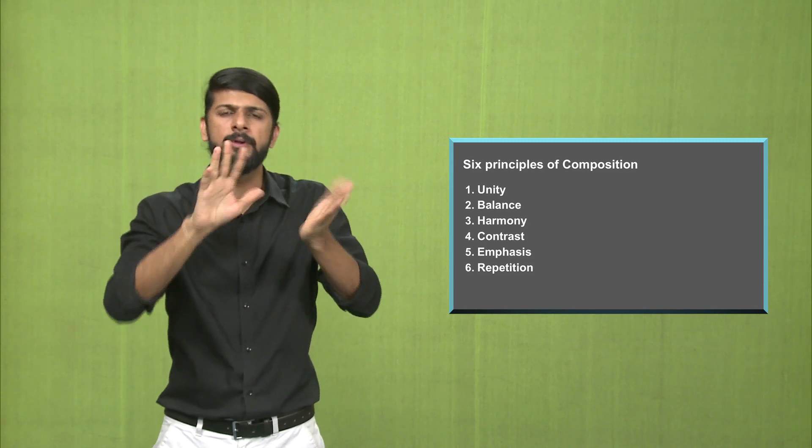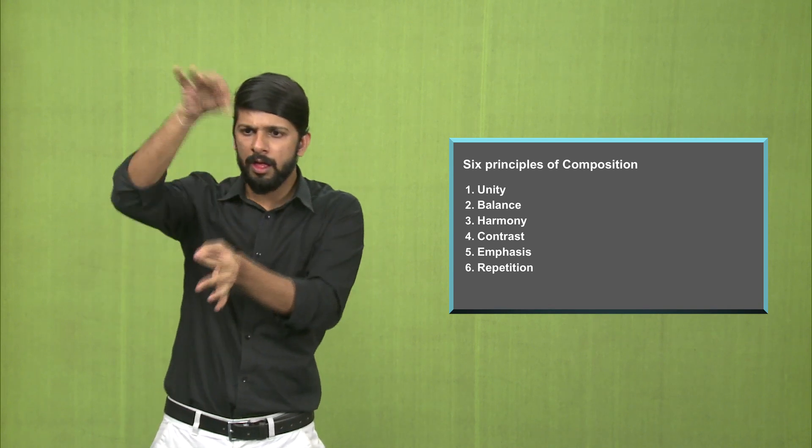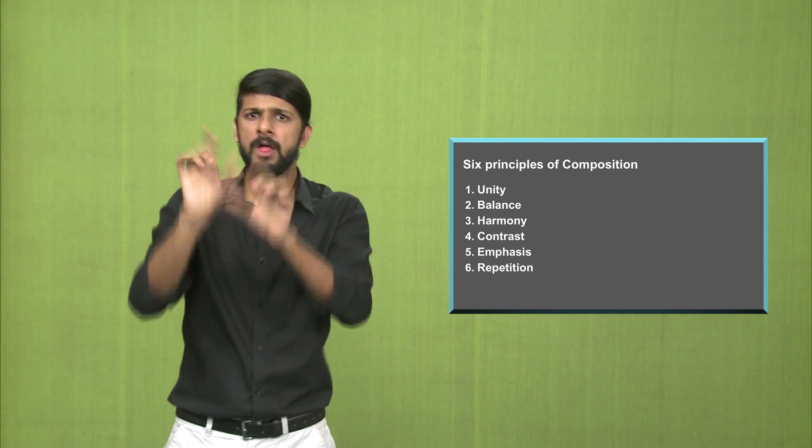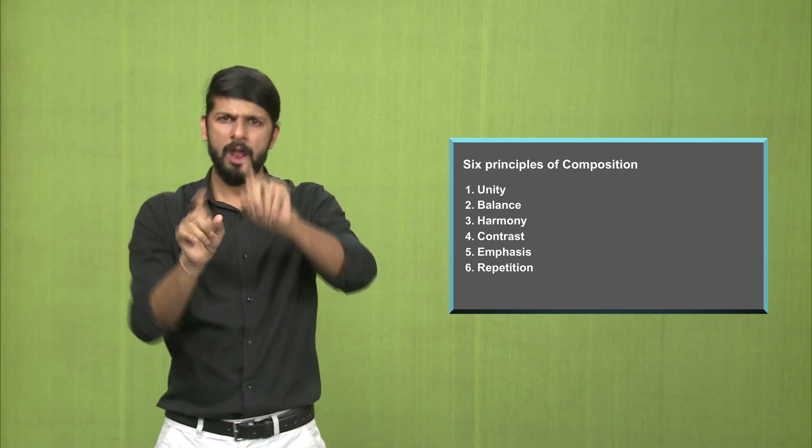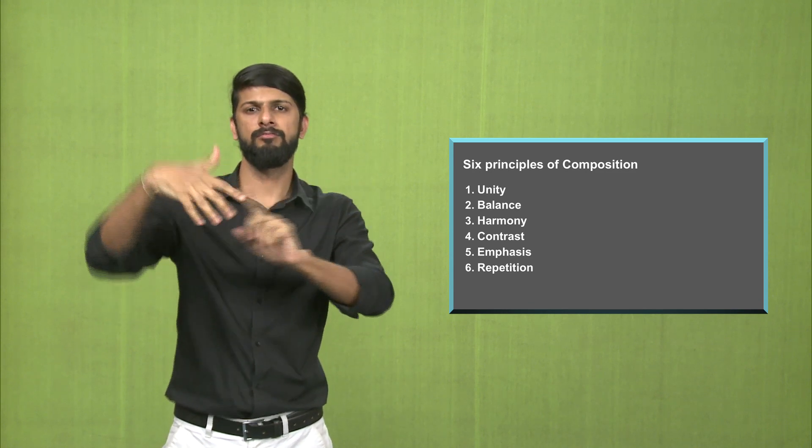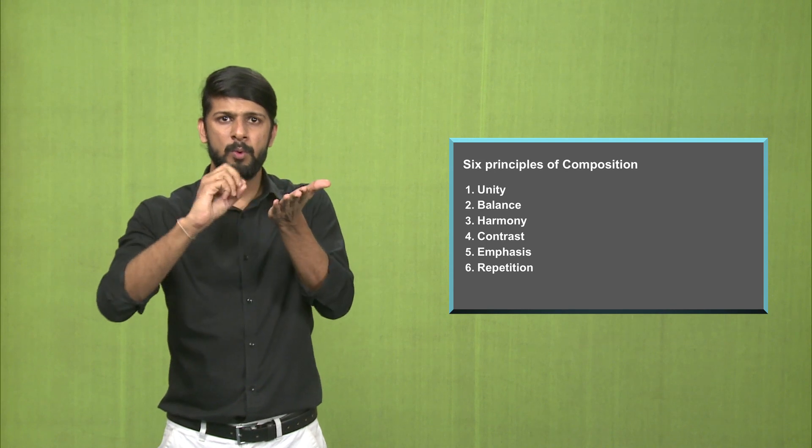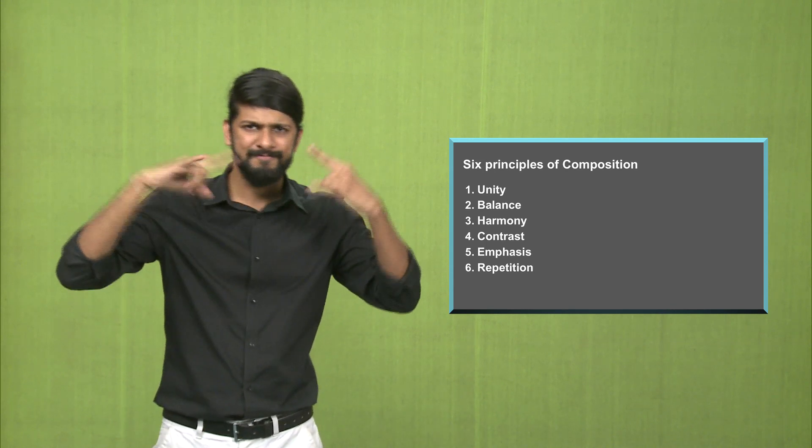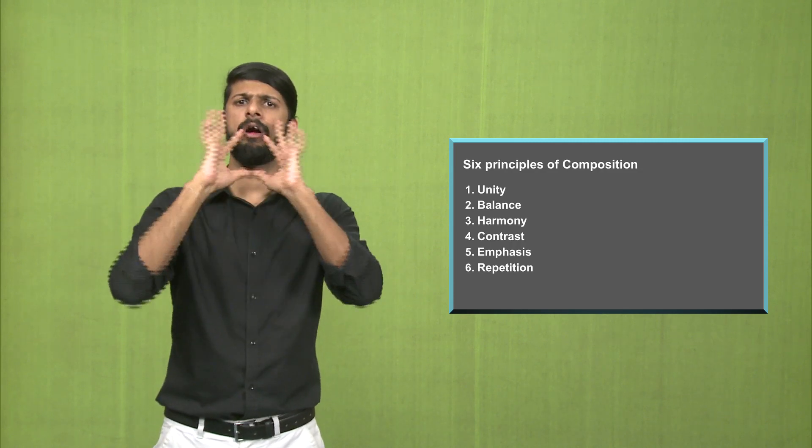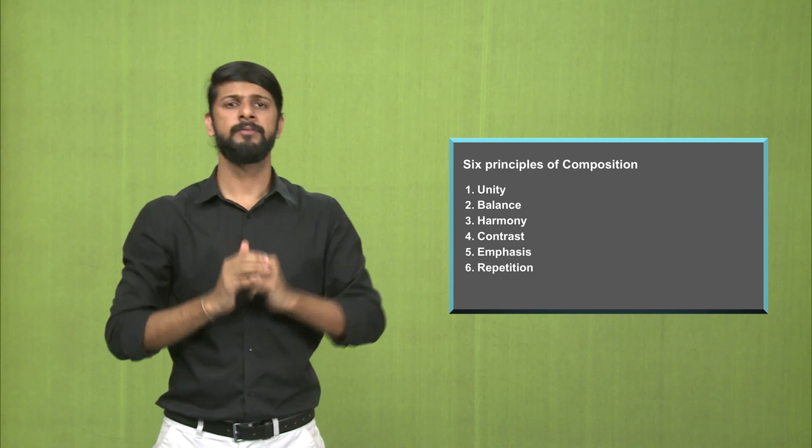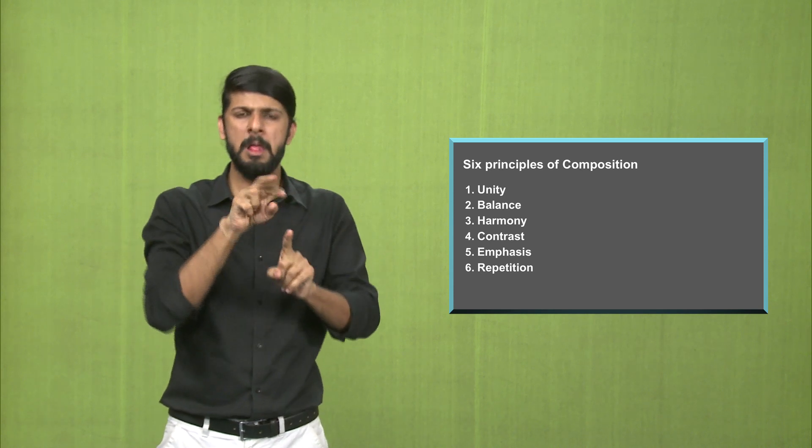Second, balance. That is, there is balance in the painting in terms of the size and shape of the figures, very lifelike and realistic depiction, balance in terms of the depiction. Third is harmony. In a work of art, you see there are two bulls here and there's harmony in terms of the depiction, which is realistic.